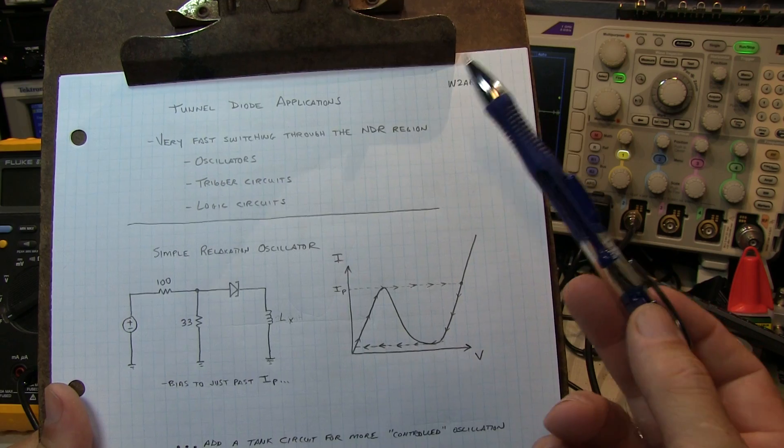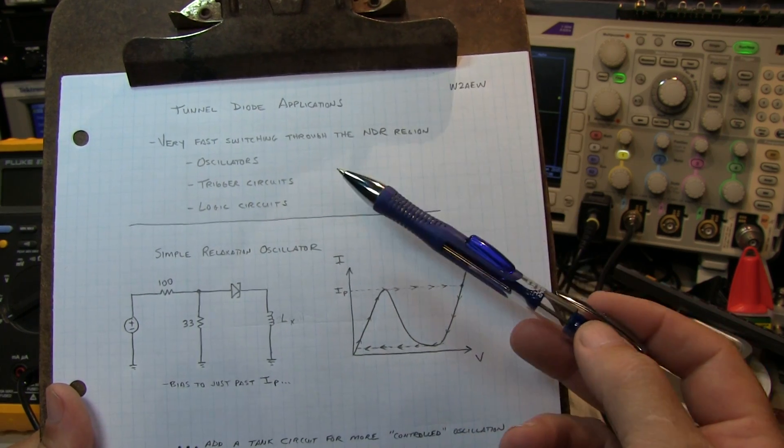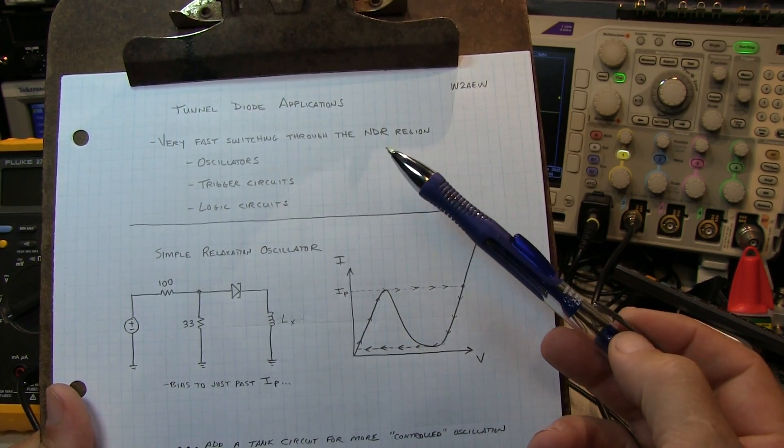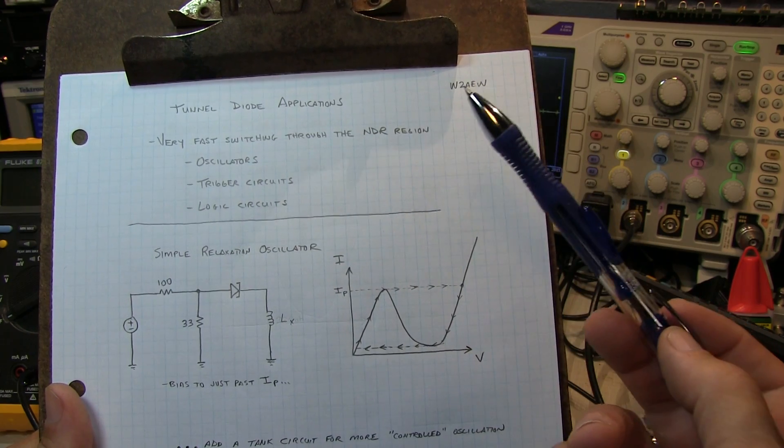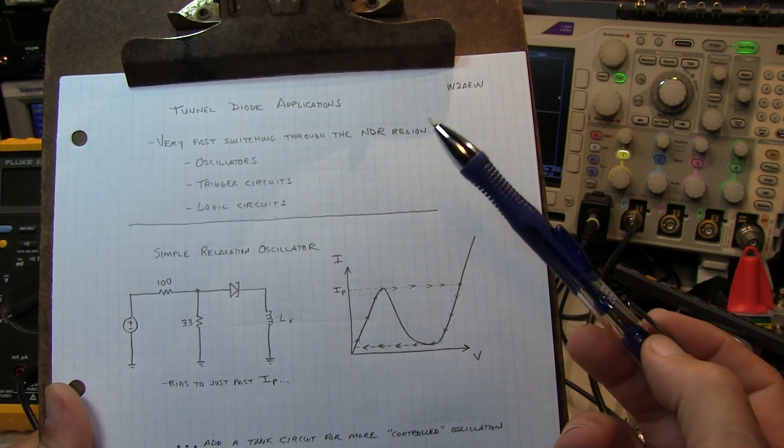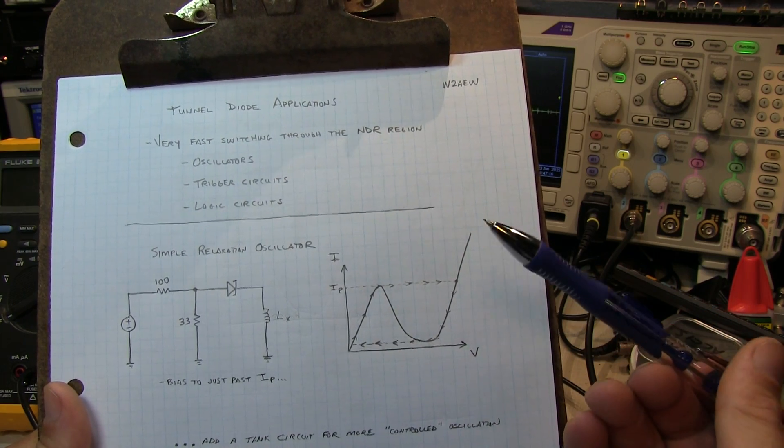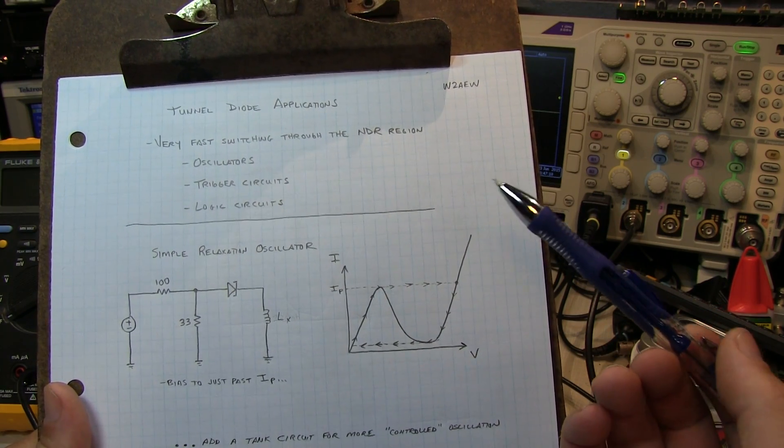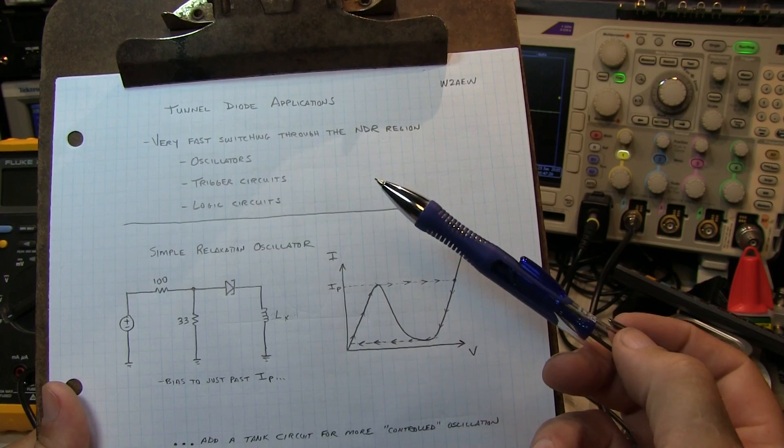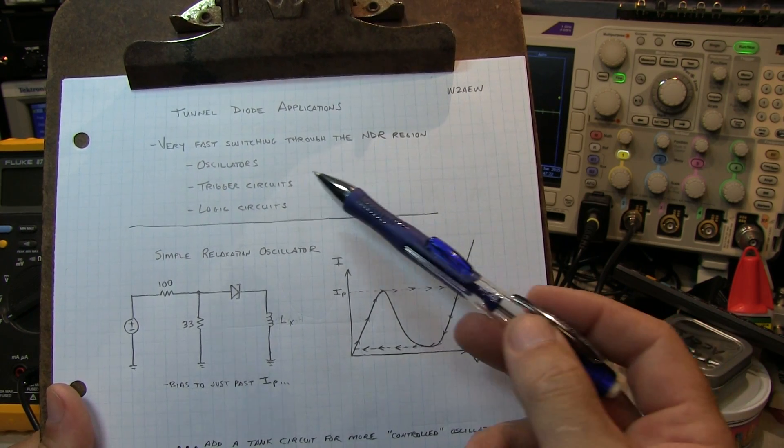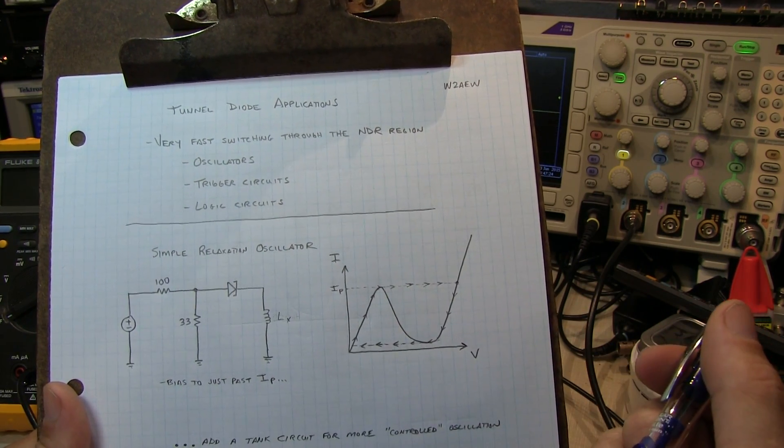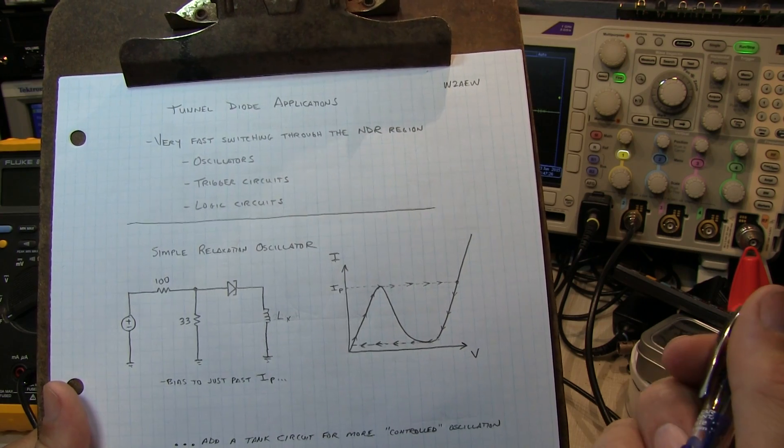So there's a lot of work that went into looking at ways of exploiting that characteristic. Things like various types of oscillator circuits, monostable and astable type switching circuits, trigger circuits for oscilloscopes as a big application, logic circuits and things like that. And again, the references that are in the show notes will have some of the data manuals for the tunnel diodes with examples of different types of circuits. So we're just going to look at a couple here.